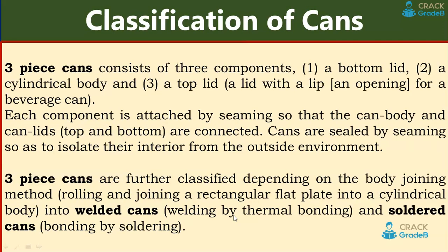Three-piece cans consist of three components: a bottom lid, a cylindrical body, and a top lid with an opening for beverage cans. Each component is attached by seaming so the can body and lids (top and bottom) are connected. Three-piece cans are further classified by body joining method: welded cans (thermal bonding) and soldered cans (bonding by soldering).